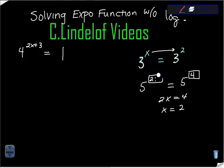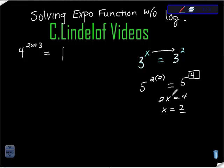Let's check that. We said x is 2, so 2 times 2 is 4, and 5 to the 4th equals 5 to the 4th. That works.